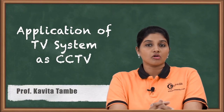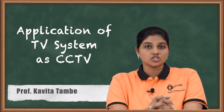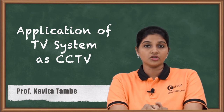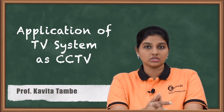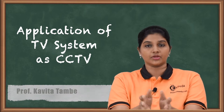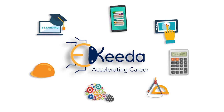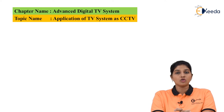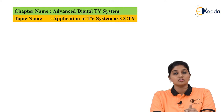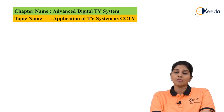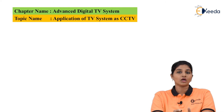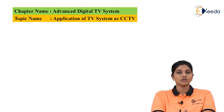Hello friends, in this video we are going to talk about one of the applications of television systems, that is CCTV — Closed Circuit Television System. So let's begin with the topic. CCTV, as its name indicates, is basically used for security purposes. We are going to talk about the various applications and functions of CCTV.